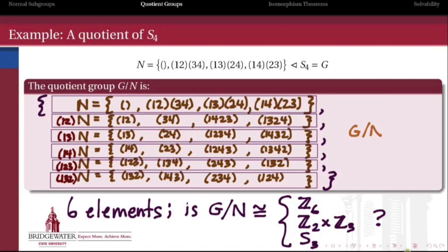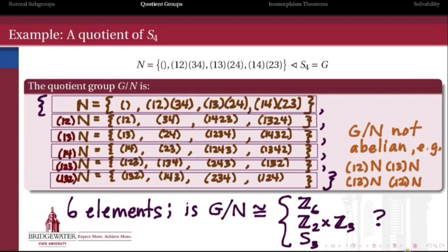Well, to figure out which it is, all we have to do is observe that this quotient group is not going to be an abelian group. Why not? Well, just compare, for instance, the result of (1,2) and (1,3) in one order and then the opposite order. Just by simplifying this product of cycles, we find out that indeed those two products do not give us the same thing. So since G mod N is not abelian, it can't be isomorphic to either of these Z mod 6 or Z₂ cross Z₃ because those are abelian. Therefore, since these are the only three groups of order 6 up to isomorphism, G mod N had better be isomorphic to S₃.